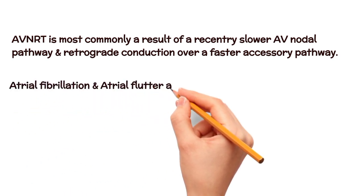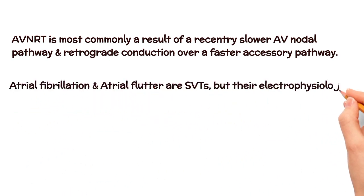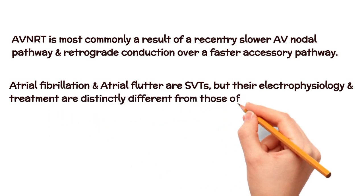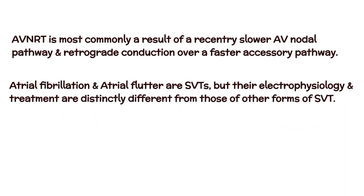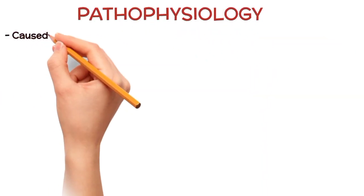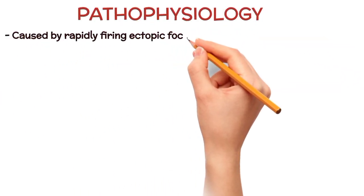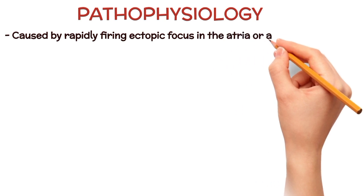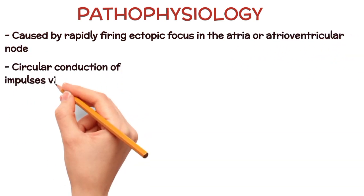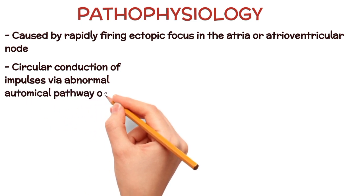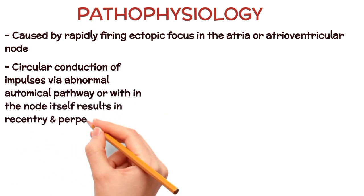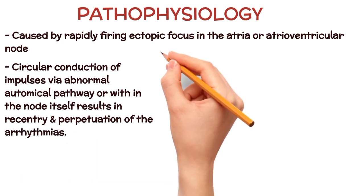Atrial fibrillation and atrial flutter are also SVT, but their electrophysiology and treatment are distinctly different from those of SVT. Regarding pathophysiology, SVT is caused by a rapidly firing ectopic focus in the atria or atrioventricular node. Circular conduction of impulses via an abnormal anatomical pathway or within the node itself results in reentry and perpetuation of the arrhythmia.